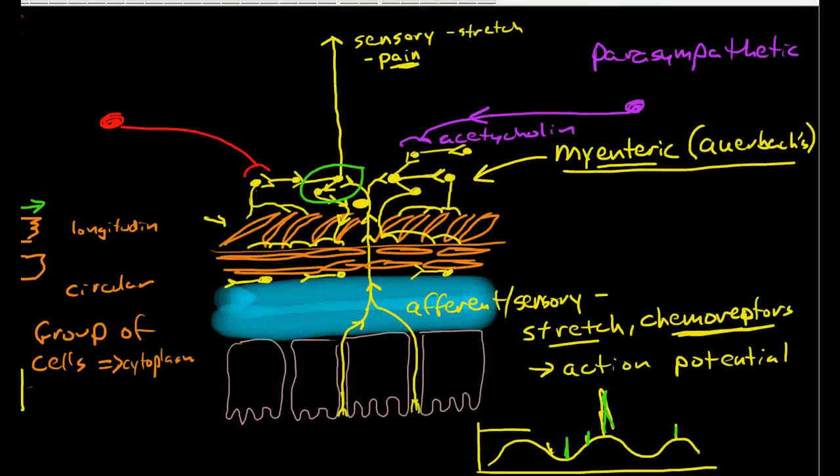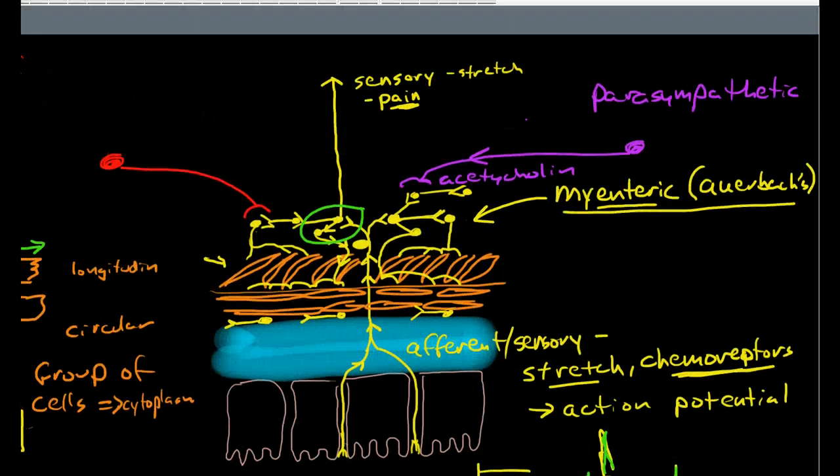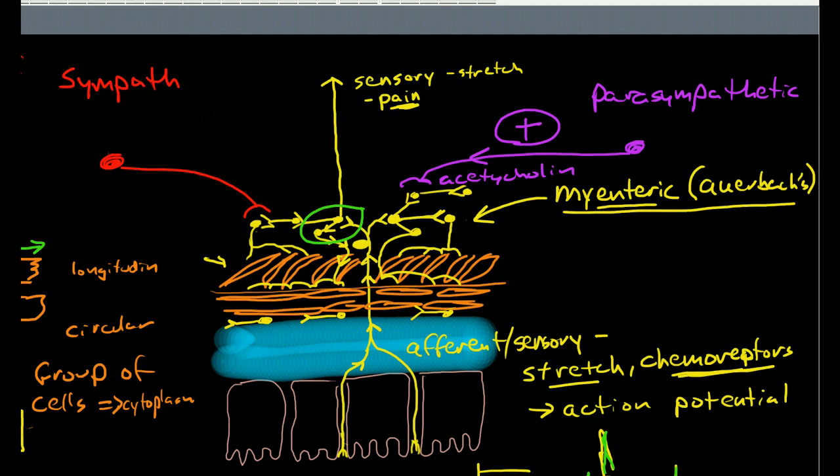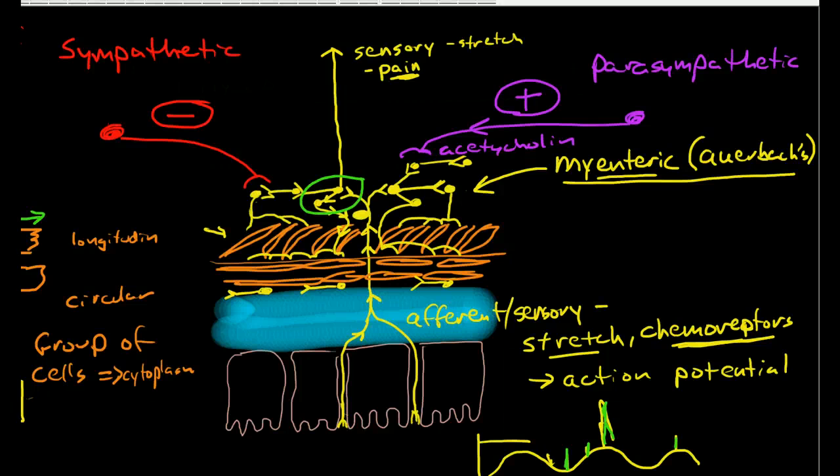The parasympathetic nervous system stimulates peristalsis via the myenteric plexus. Now the sympathetic nervous system actually inhibits peristalsis, however it really only does this in extreme circumstances.